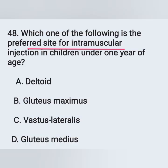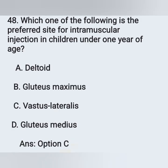Question 48: Which is the preferred site for intramuscular injection in children under one year of age? Options: option A, deltoid; option B, gluteus maximus; option C, vastus lateralis; option D, gluteus medius. The preferred injection site for children under one year of age is vastus lateralis. Option C is the correct answer.